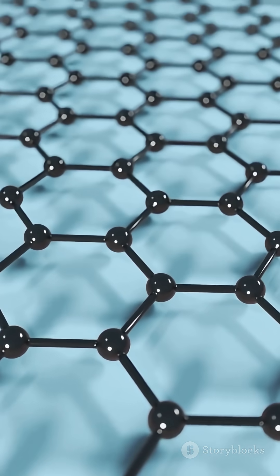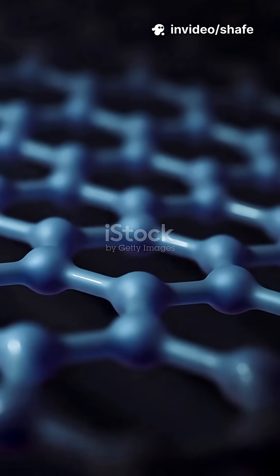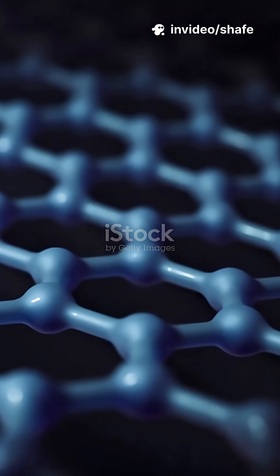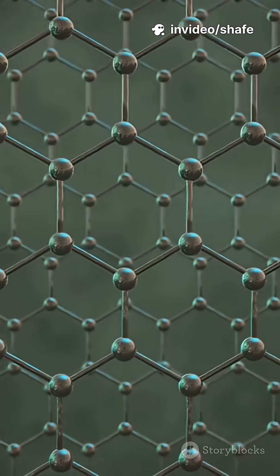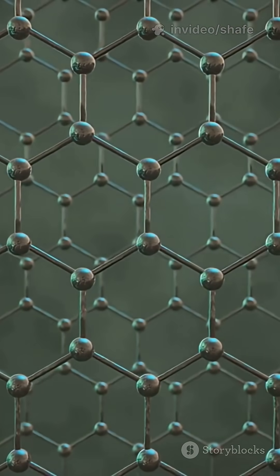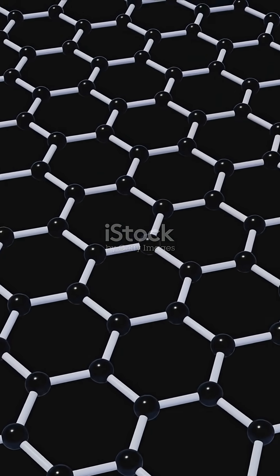One of the wildest ideas out there is something called graphene. It's basically a single layer of carbon atoms arranged in a honeycomb pattern. Imagine something so thin it's technically two-dimensional, but it's about 200 times stronger than steel.